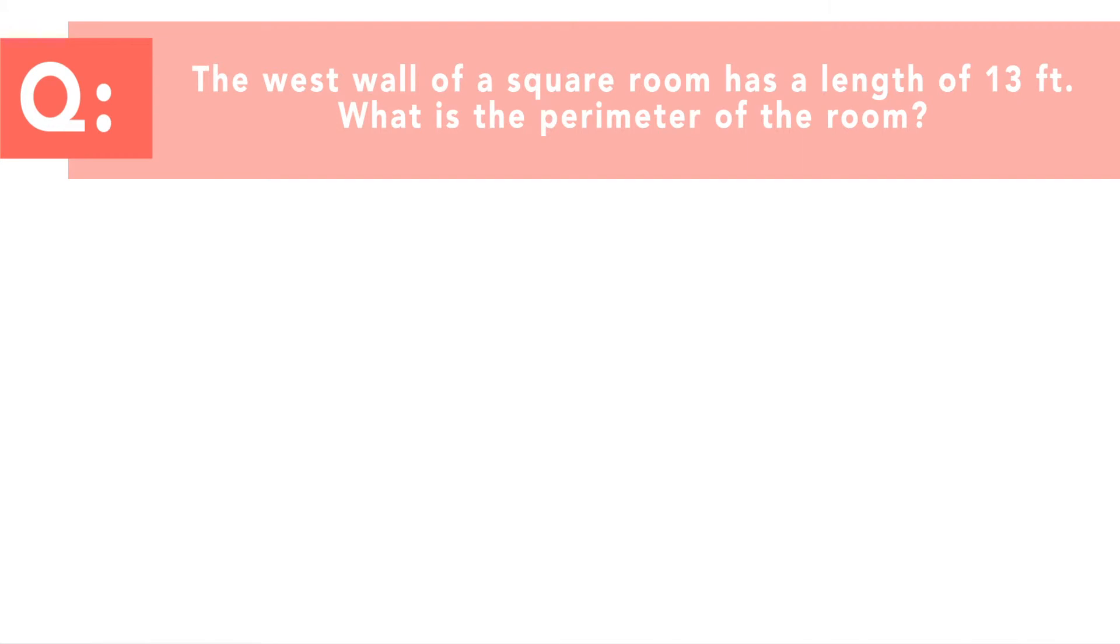The west wall of a square room has a length of 13 feet. What is the perimeter of the room? So, the answer options would be 48 feet, 52 feet, 169 feet, or there's just not enough information to know.